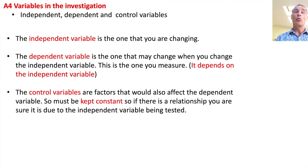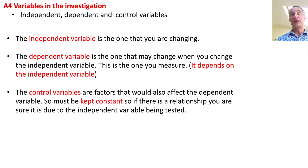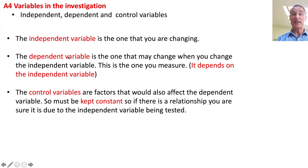What are independent, dependent and control variables? The independent variable is the one that you are changing. The dependent variable is the one that may change as a result — this is the one you measure, and it depends on the independent variable. The control variables are factors which would also affect your dependent variable, so you must keep these the same. That way, if there is a change in your dependent variable, you know it's because of the independent variable you are testing, not the other variables you are controlling.